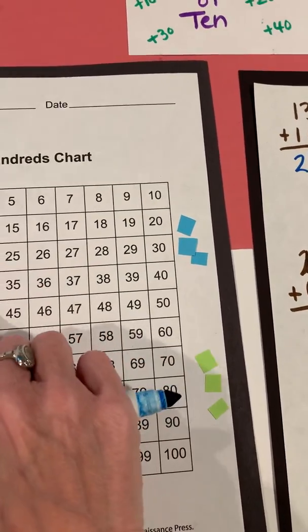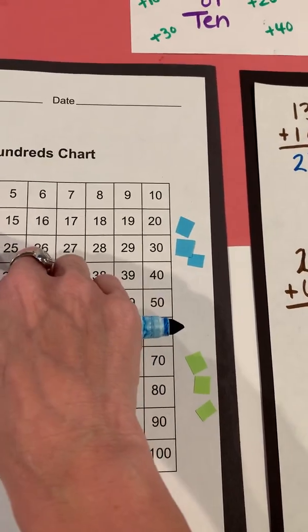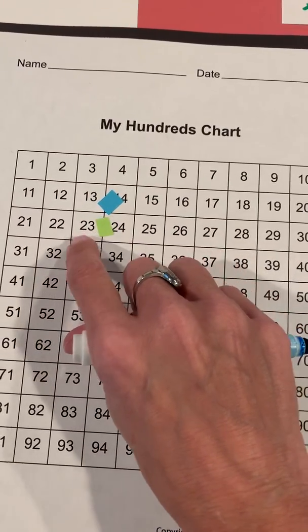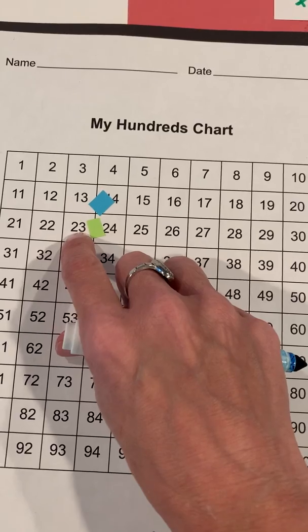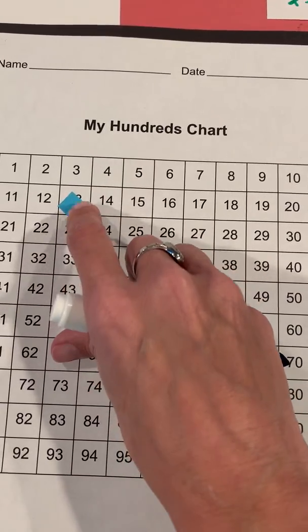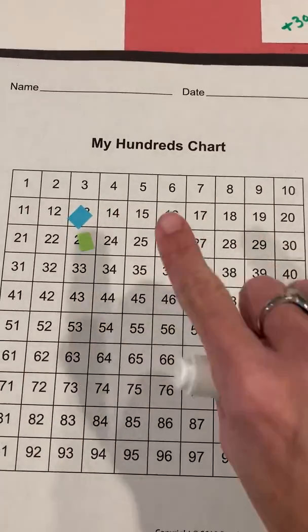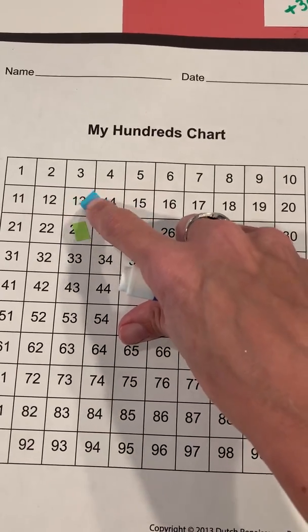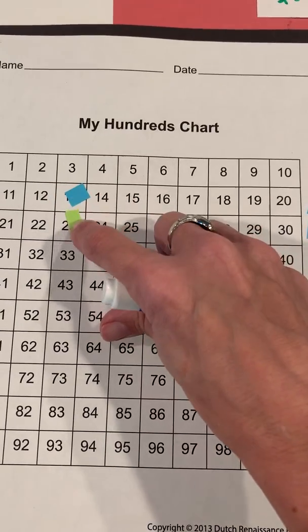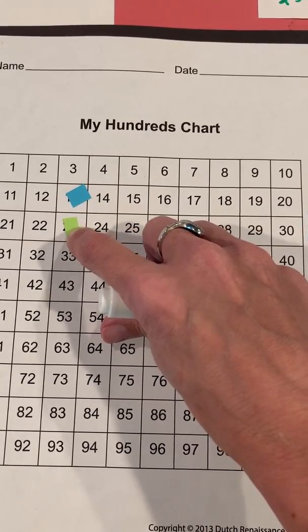Now you notice, when you did this earlier in the year, as I added 10, basically the only digit that changed was the digit in the tens place. And you realized that if I'm adding 10, if I can think of this hundreds chart, I'm basically just going down the chart even though I'm adding, I'm going down by getting to a larger number.